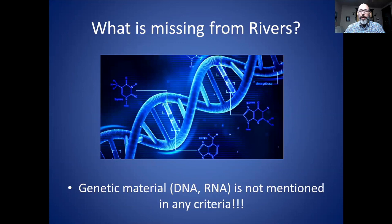Notice what is not in Rivers' criteria: there is nothing about genetic material, DNA, or RNA mentioned at all. You don't even have to look at genetic material in order to prove these criteria. Formally, the genetic material or specific sequences does not have a role in proving that a virus causes a disease — this is specified by the authors of the Nature paper.